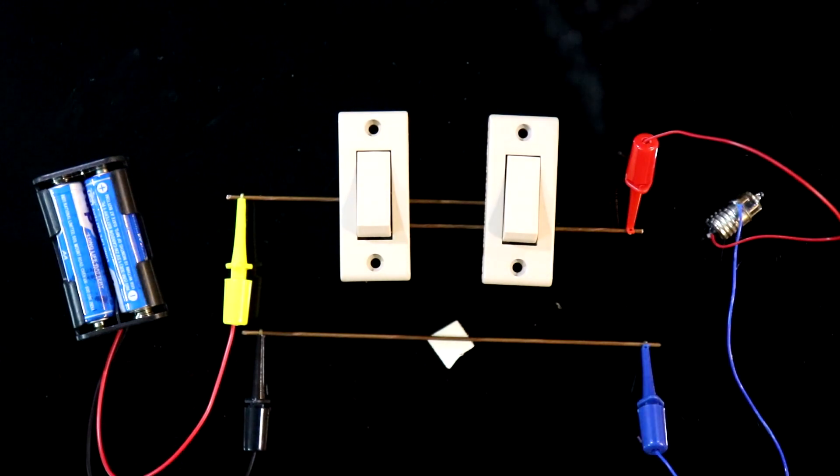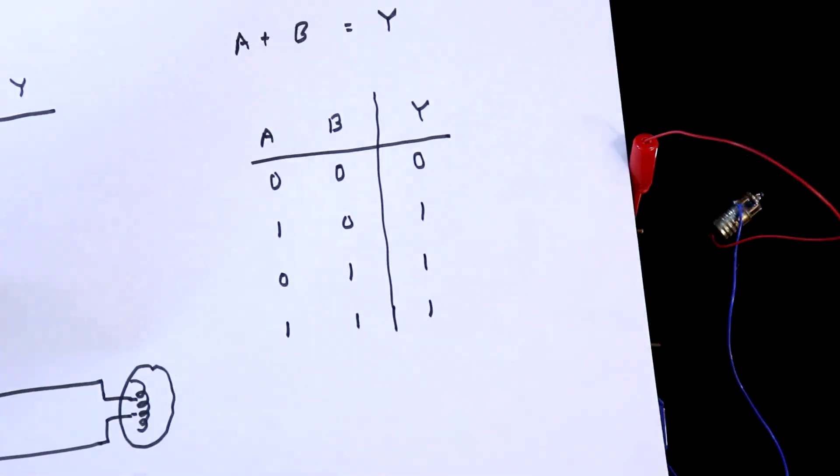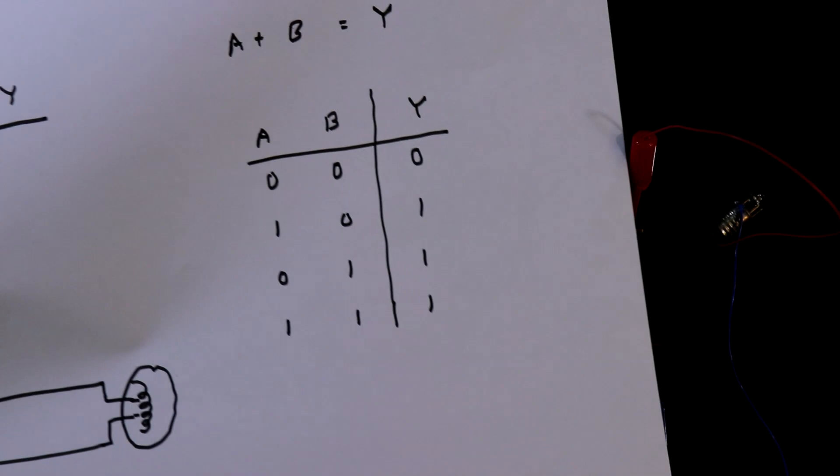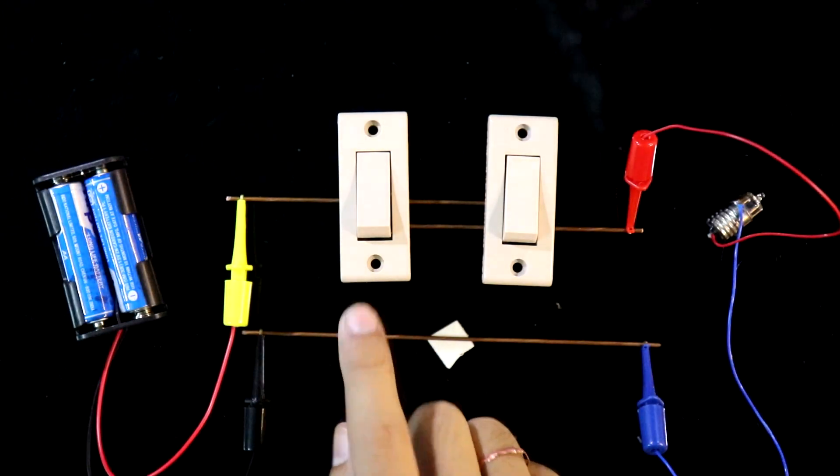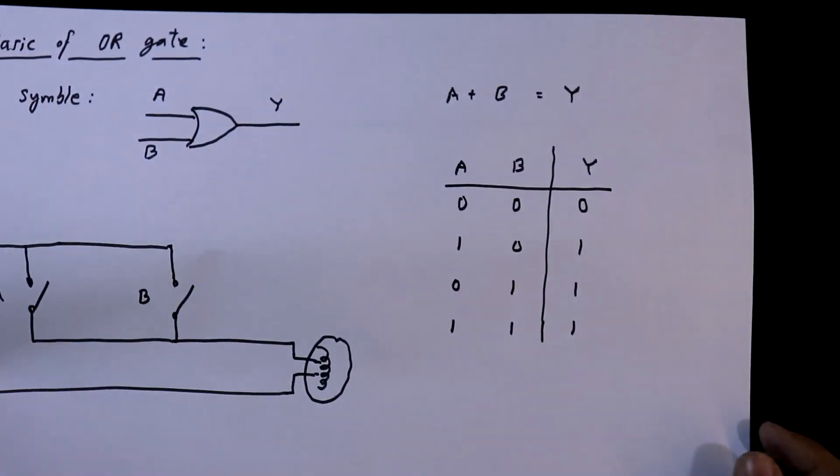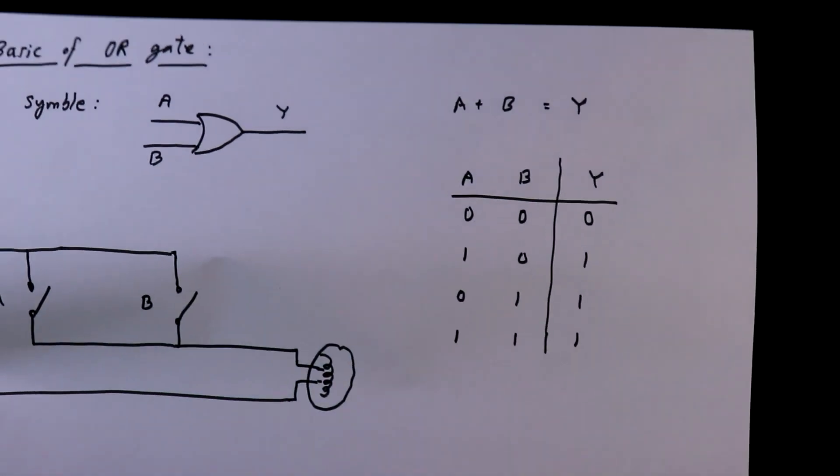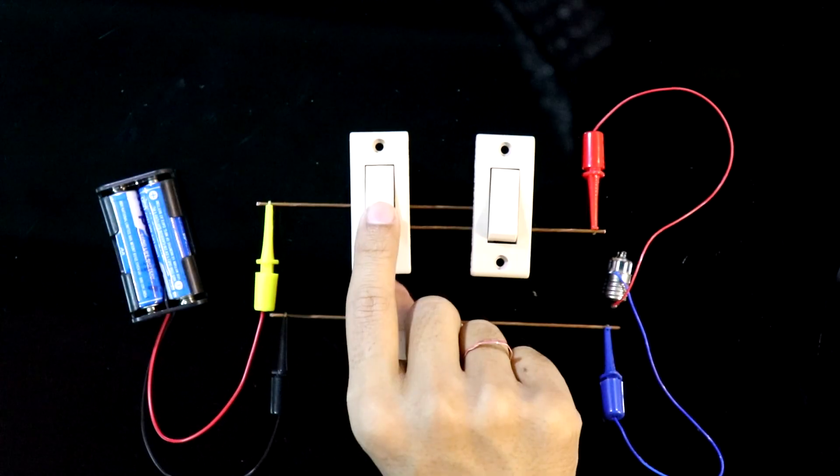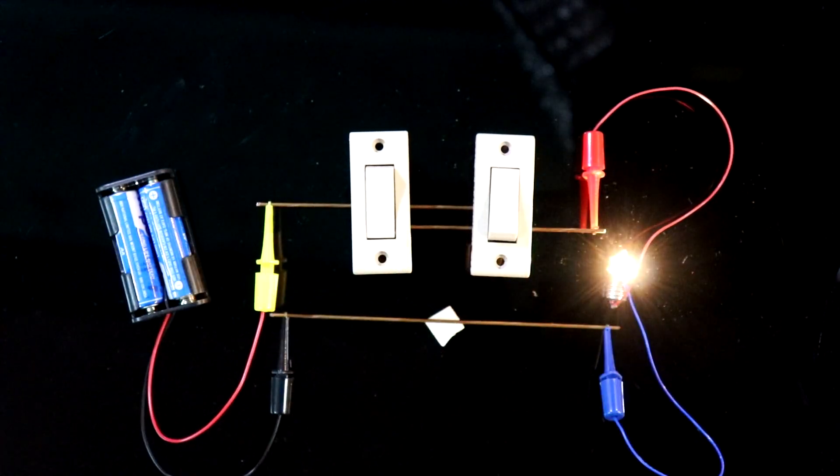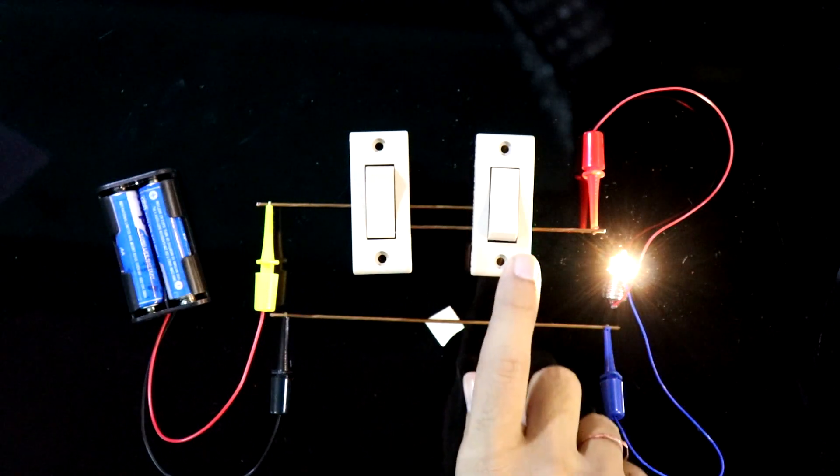Both the switches are OFF. So we are getting 0. This switch is A and this one B. Now A is ON. So we are getting the output. And B is OFF.